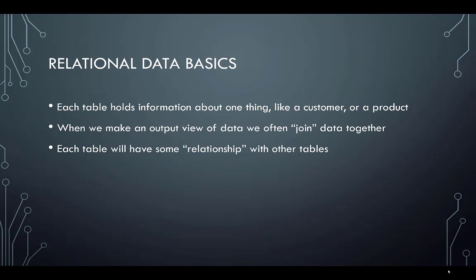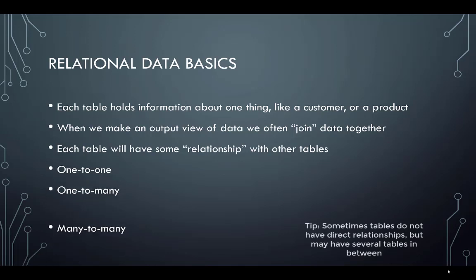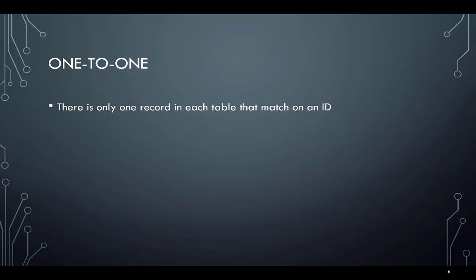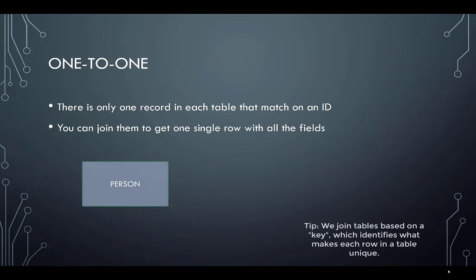Each table will often have some relationship with other tables, and we can often see that from looking at the database design or doing some detective work of our own. The relationships are one-to-one, one-to-many, and many-to-many. In a one-to-one relationship, there's only one record in each table that can match on an ID, or a set of IDs if it's a composite key. You can join them together to get one single row with all the fields in both tables, and you won't have any duplicates.